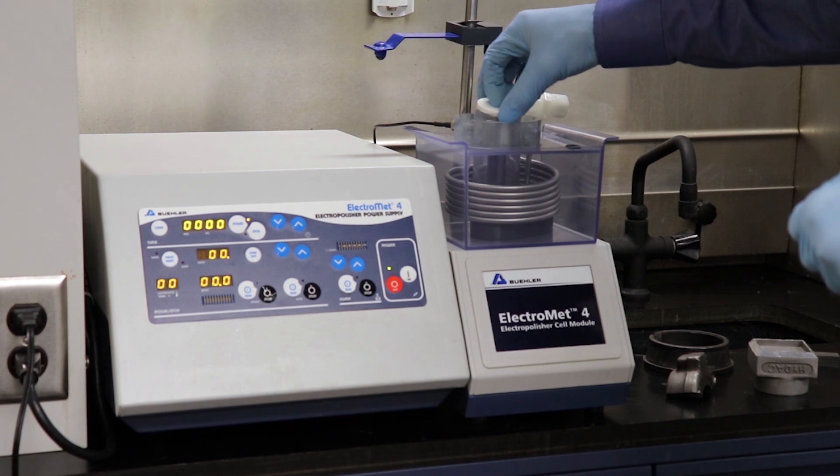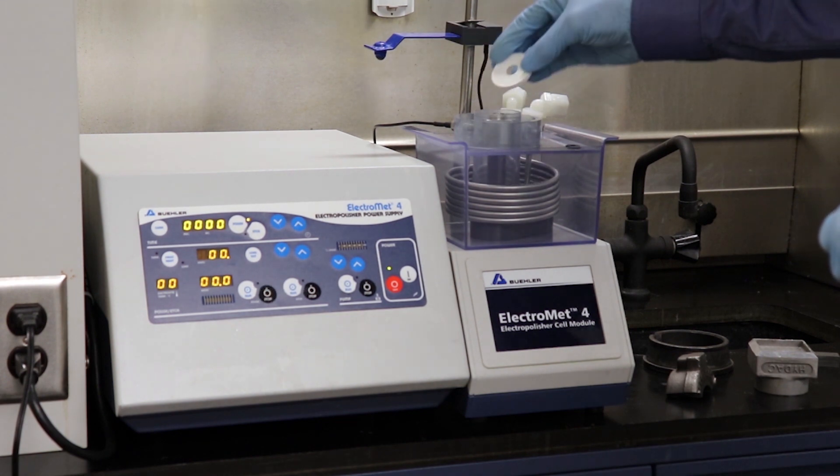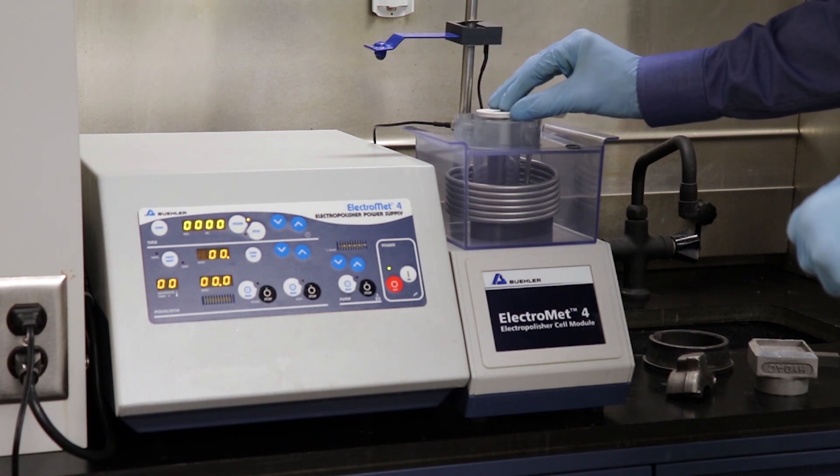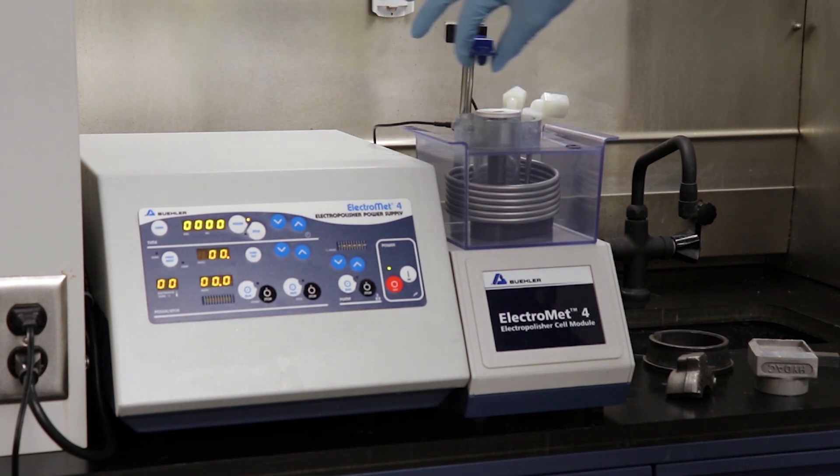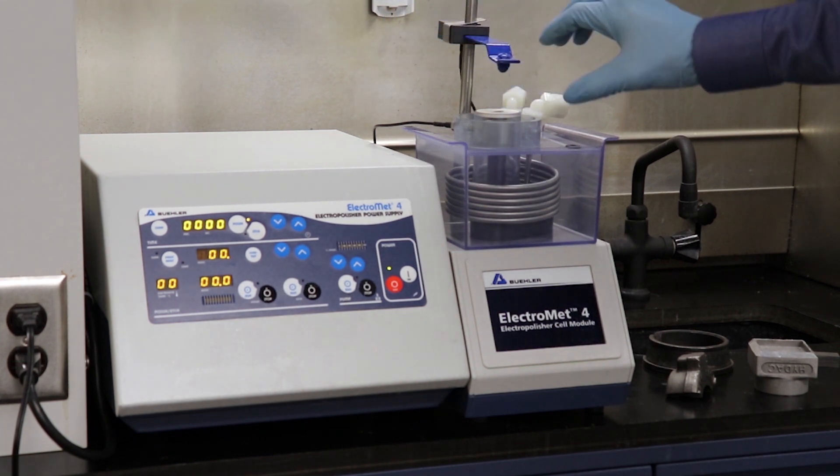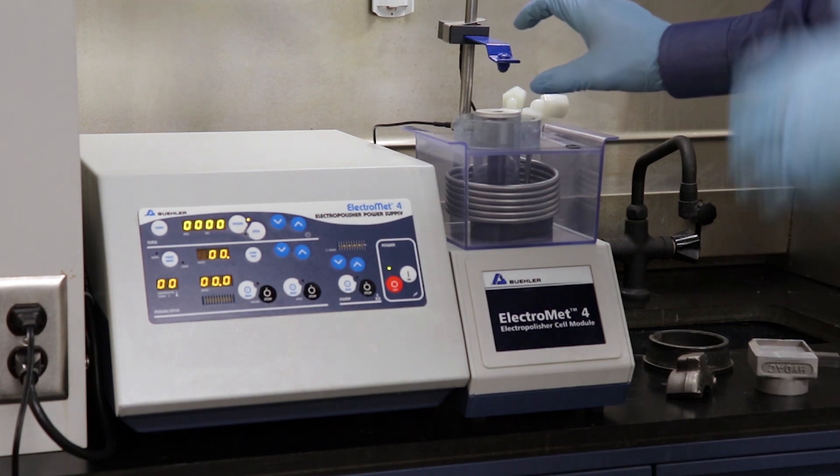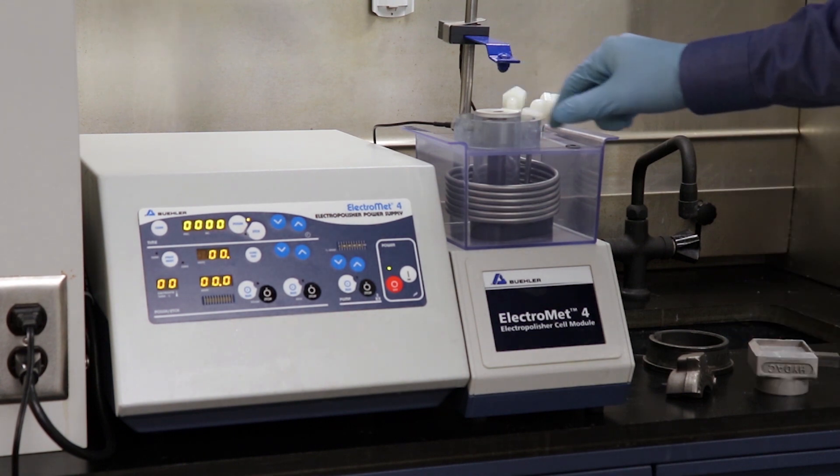Different current density we might want to achieve for different material samples. We're going to insert a mask in here and the sample is going to go on top of the mask and the anode is here. It's placed on the back of the sample and this creates a power cell between the sample and the electrolyte.